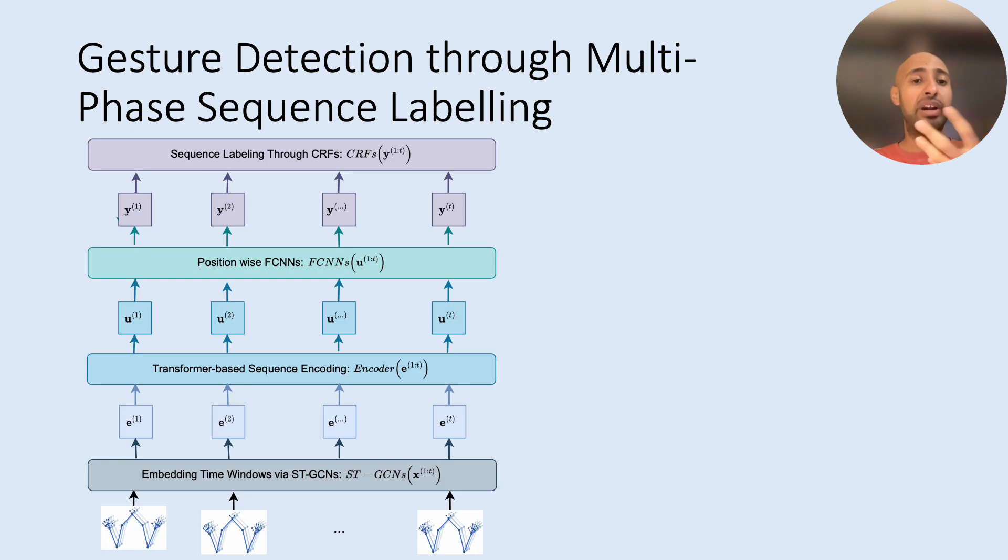And then the main framework is embedded with a sequential labeling approach starting from the first layer when we embed this extracted or constructed spatial temporal graph of upper body movements. And then over a sequence of this time windows, we use transformer encoder to build a more powerful temporal representations over a long sequence of time windows.